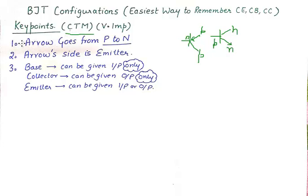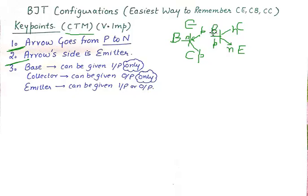The second important point is that the arrow's side is the emitter. So if you look at a transistor, first you establish whether it's PNP, you know this is the base, and out of the two remaining terminals you may be confused about which is emitter and which is collector. The one with the arrow is always the emitter. It doesn't matter if it is going towards the base or moving away from the base — that terminal with the arrow is the emitter.